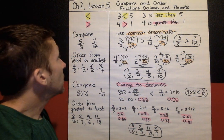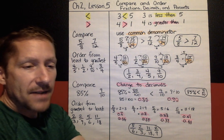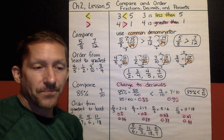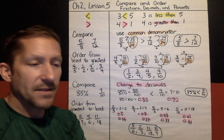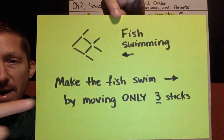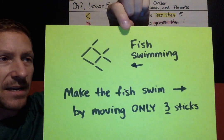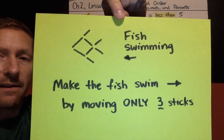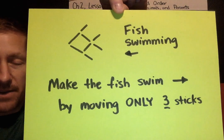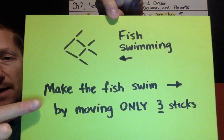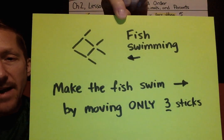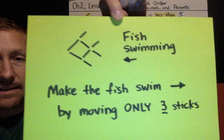That's it for Chapter 2, Lesson 5. I do have a hidden treasure for you — SpongeBob gave me the following puzzle. You have a fish drawn here that is swimming to the left. The hidden treasure challenge is: how can you make this fish swim to the right by moving only three sticks?